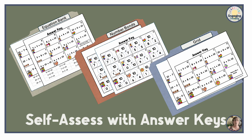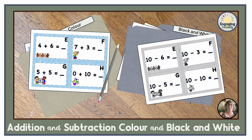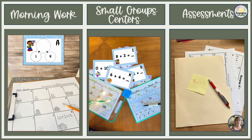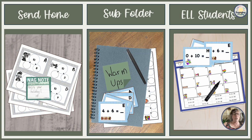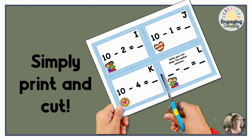To support self-correction for both the immediate feedback students love and to minimize your workload, each task card recording sheet for addition and subtraction comes with its own answer key. Everything comes in color and black and white. These are great for morning work, small group centers, and assessments. You can send them home, put them in a sub folder, or use them with ELL students as they learn to shape the numbers if they're not from an Arabic script. They are simply print and go, or the task cards are simply print and cut.